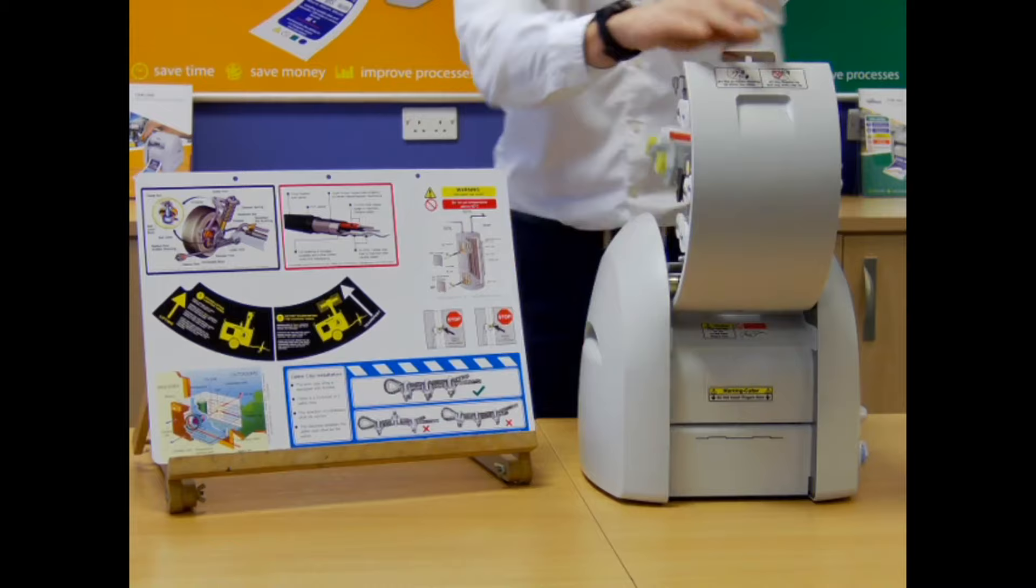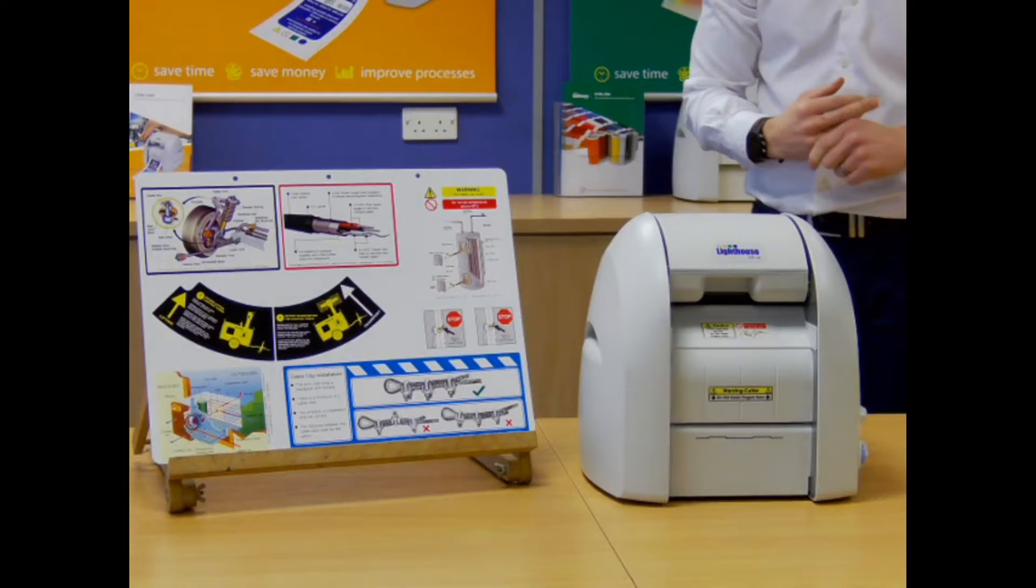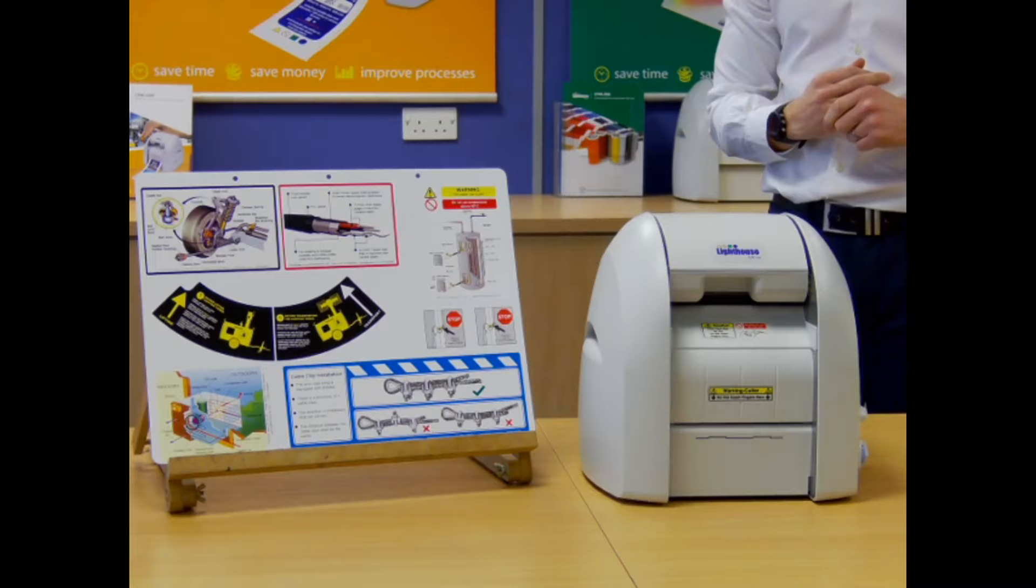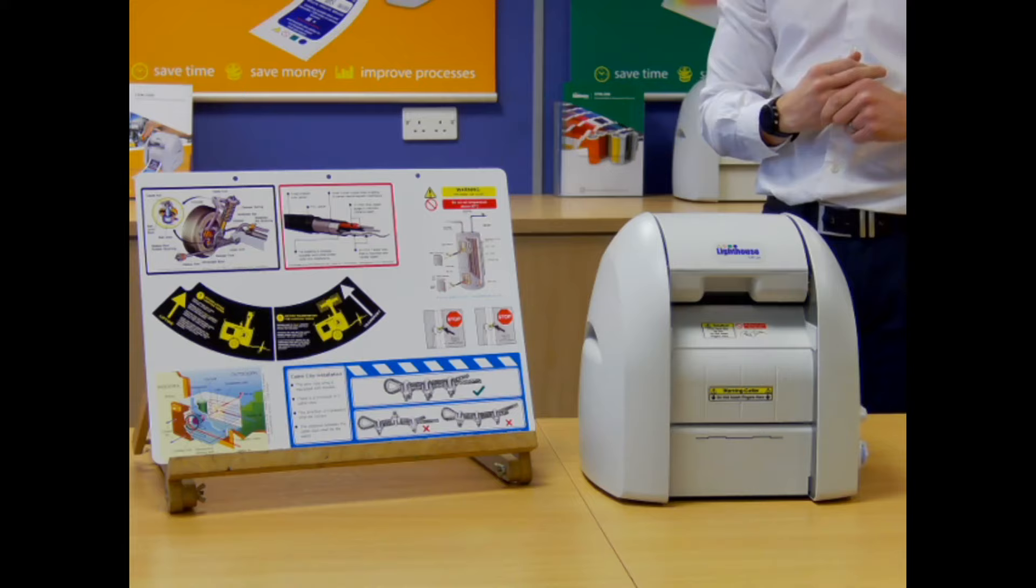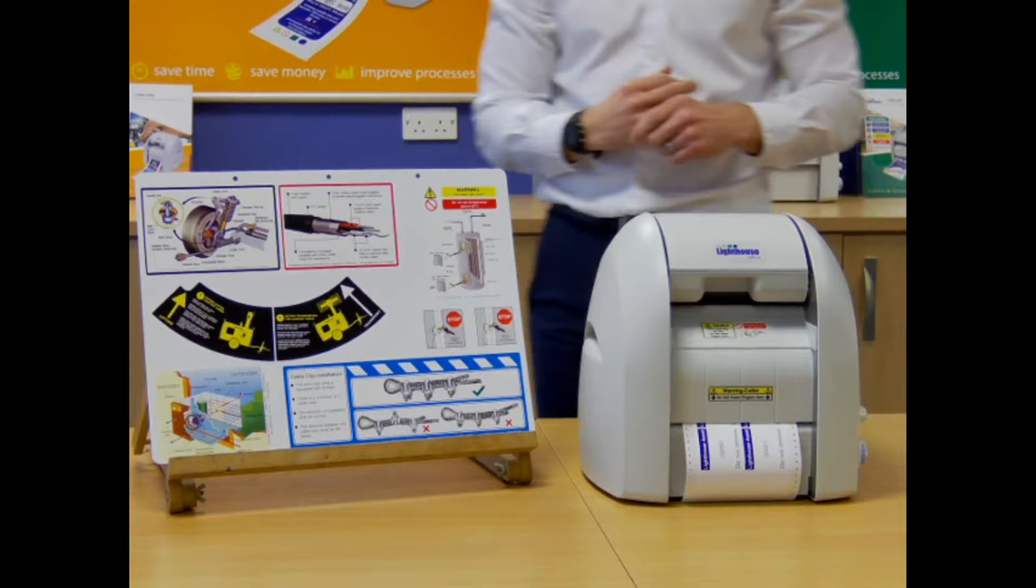There we go, John's just going to change the ribbon. It's printed the black, and we're just putting the blue cartridge in now, close the lid, and it will automatically start printing.